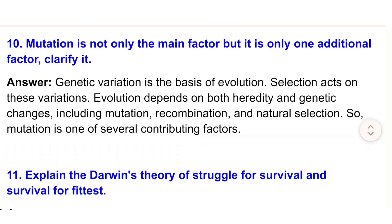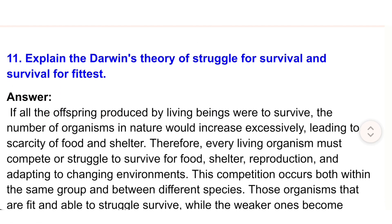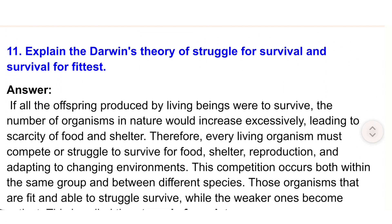10) Mutation is not only the main factor but it is only one additional factor — clarify. Answer: Genetic variation is the basis of evolution. Selection acts on these variations. Evolution depends on both heredity and genetic changes, including mutation, recombination, and natural selection. So mutation is one of several contributing factors.